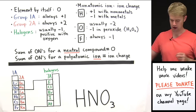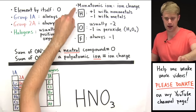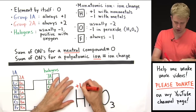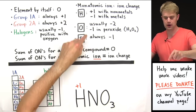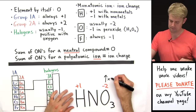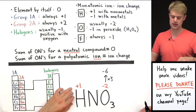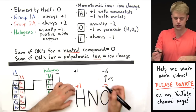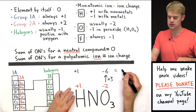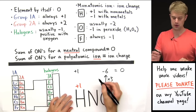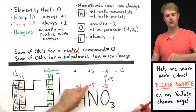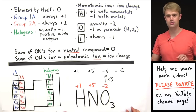HNO3. Hydrogen is combined with nonmetals — nitrogen and oxygen — so its oxidation number is going to be plus one. Oxygen is going to be minus two, but we have three oxygens, so minus two times three gives us minus six. So we have plus one from hydrogen, plus whatever nitrogen is, minus six, and that has to give us zero because this is a neutral compound. So nitrogen's oxidation number will be plus five. One plus five minus six equals zero.